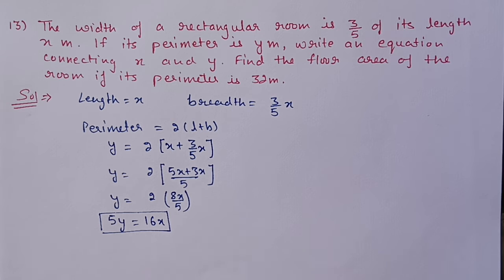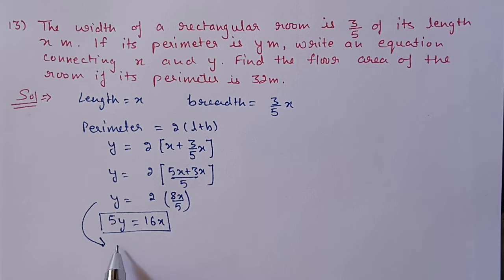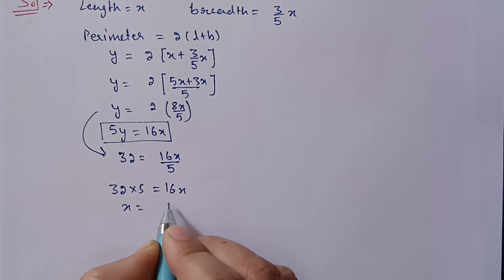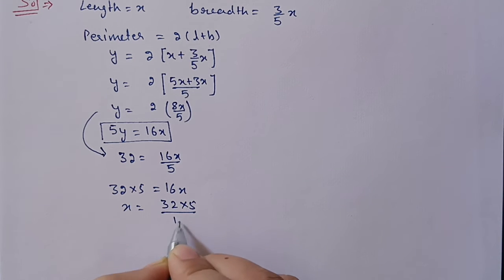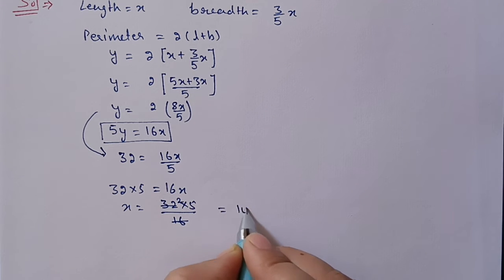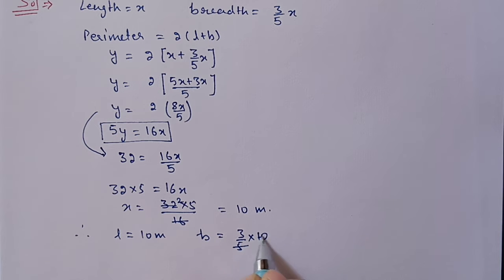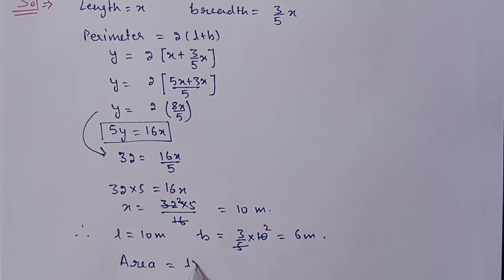Next, find the area if perimeter is 32. Perimeter means y, so y equals 32. From 5y = 16x: 32 × 5 = 16x, so x = (32 × 5)/16 = 10 meters. Therefore length is 10 meters and breadth is (3/5) × 10 = 6 meters. Area equals length into breadth: 10 × 6 = 60 square meters.